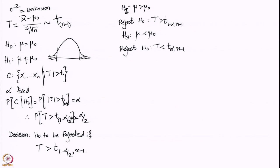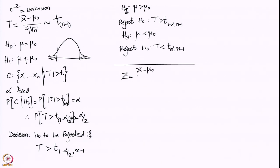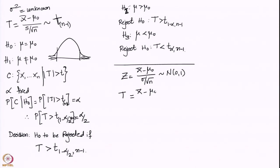This is what we have learned so far in hypothesis testing. The two important test statistics are: Z = (x-bar minus mu-zero) / (sigma / sqrt(n)), distributed as Normal(0,1); and T = (x-bar minus mu-zero) / (s / sqrt(n)), distributed as Student's t with n minus 1 degrees of freedom.